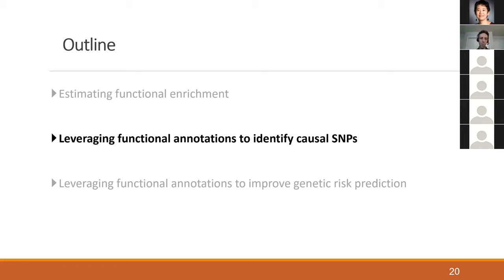We spoke about estimating functional enrichment up until now, which is a broad question — understanding genetic architecture, where heritability is coming from, whether it comes from SNPs in enhancers and coding regions, and how to partition heritability. Now I'm going to speak about two more specific tasks that we can do by leveraging functional annotations.